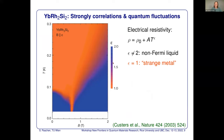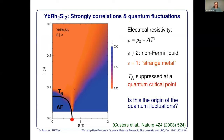Now let's look at exponent equal one — what we call the strange metal, a metal with linear-in-temperature resistivity. It seems to come out of nothing, but it does come out of the point where a phase transition is continuously suppressed. There is an antiferromagnetic ordering transition at very low temperature, and indeed where this tornado is anchored, this phase transition disappears. But that ordering transition is not the reason for the strange metal behavior — let me explain.